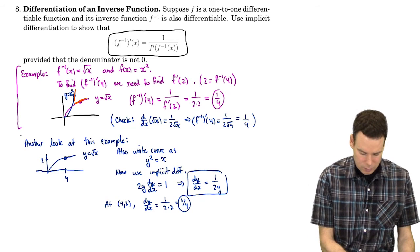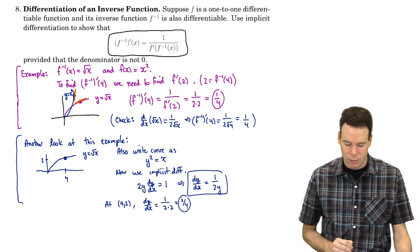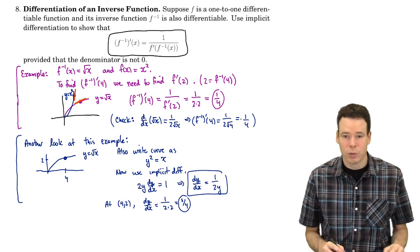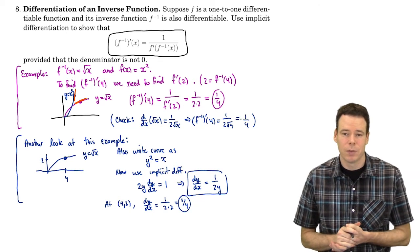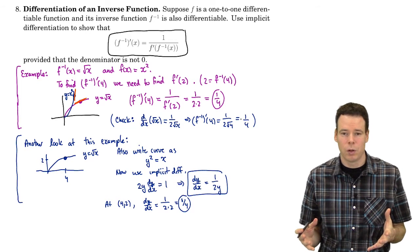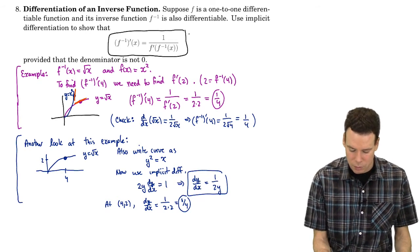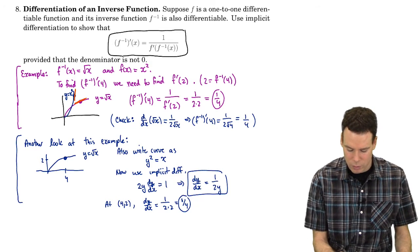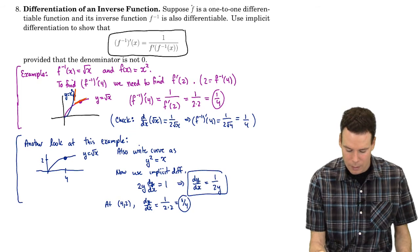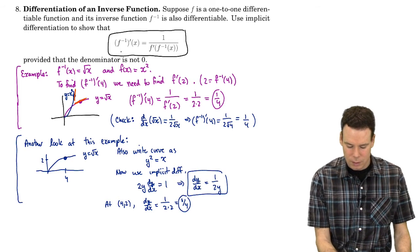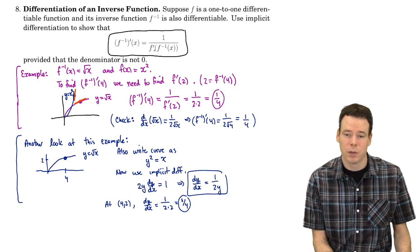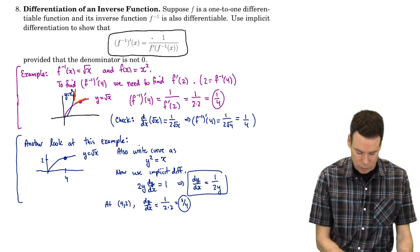So we've seen essentially three different methods. The middle method relied on having a differentiation rule for the square root of x. In general, for inverse functions we probably don't have a differentiation rule already, so we're going to try to find one — and that's really the nature of this equation we're trying to verify.